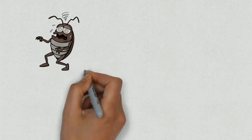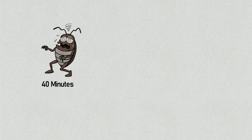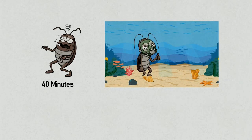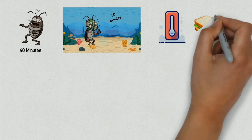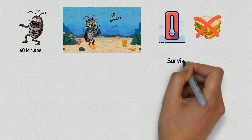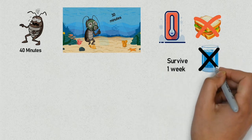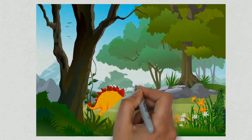A cockroach can hold its breath for 40 minutes and can survive being submerged underwater for half an hour. Because they are cold-blooded insects, cockroaches can live without food for one month, but will only survive one week without water.